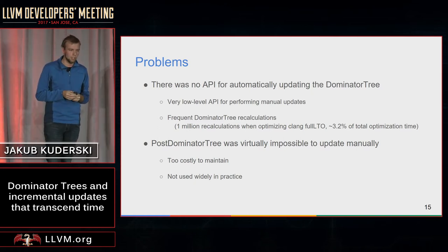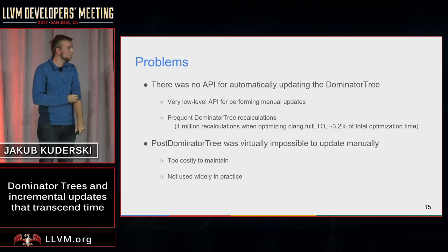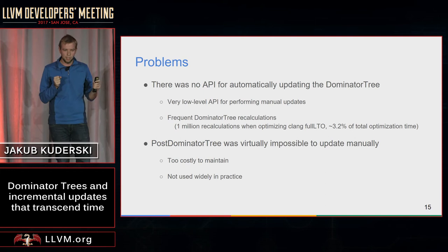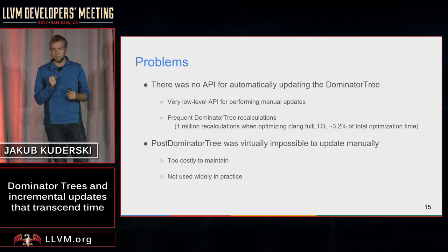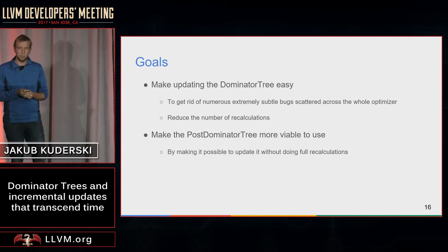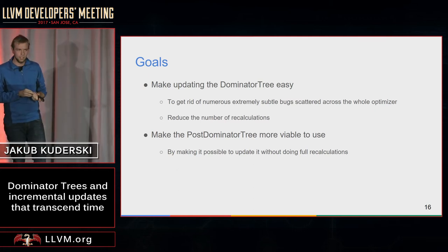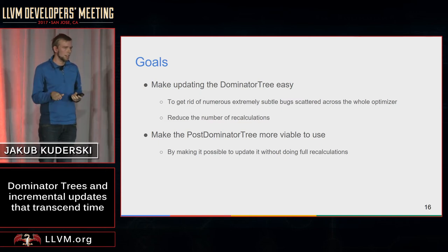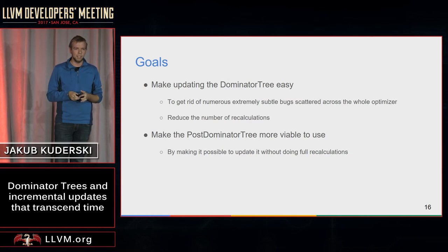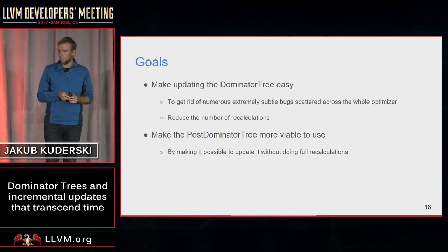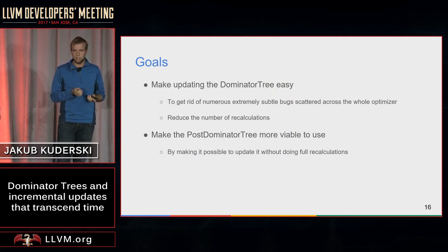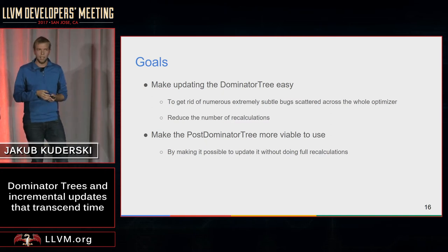The bigger problem was with the post-dominator tree, because it's not really possible to figure out how to update it manually. This created a chicken-and-egg problem: post-dominator tree was hard to update manually, so no one updated it, no one preserved it, so it was costly to maintain, so no one used it. We needed to make updating the dominator tree easier and have an automatic way to do it. The two selling points are making fewer calculations, spending less compile time preserving dominators, and getting rid of bugs scattered across LLVM that try to update dominators manually. We also wanted to make the post-dominator tree more viable by enabling automatic updates.